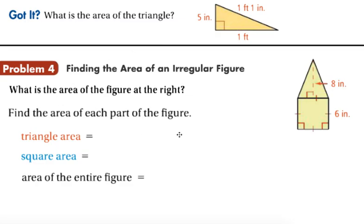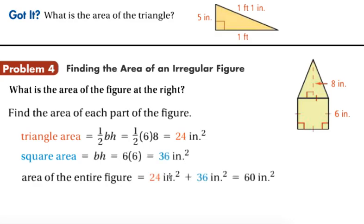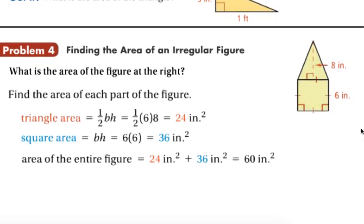Problem 4: finding the area of an irregular figure. What's the area of the figure at the right? When you have an irregular figure you're just going to divide it up into figures that you know the formulas for. This one we have a square and a triangle. The area of the triangle is one half of the base times the height. Since all sides of the square are 6, the base of the triangle is 6 and its altitude is 8, so an area of 24. For a square it's the side squared which is 36 square inches. The area of the entire figure is just the sum of those.